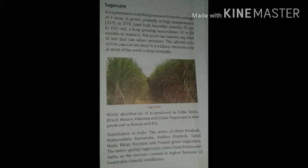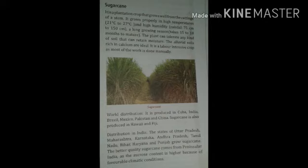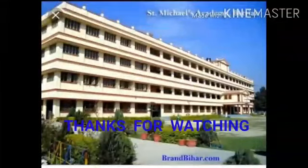Distribution in India: sugarcane is grown in Uttar Pradesh, Maharashtra, Karnataka, Andhra Pradesh, Tamil Nadu, Bihar, Haryana and Punjab. The better quality sugarcane comes from Peninsular India because it has favorable climatic conditions and the sucrose content is higher.